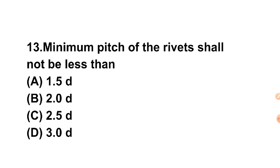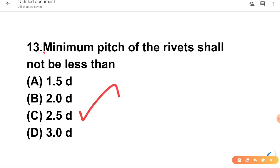Question 13: Minimum pitch of rivets — options are 1.5dr, 2.0dr, 2.5dr, and 3.0dr. The minimum pitch of rivets shall not be less than 2.5dr.